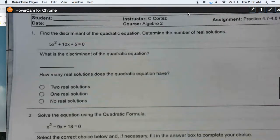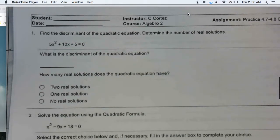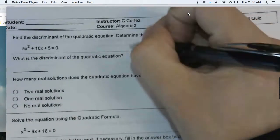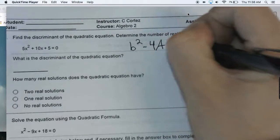We're taking a look at the practice 4-7 through 4-8 quiz. This first problem has you taking a look at the discriminant, which is going to be b squared minus 4 times a times c.